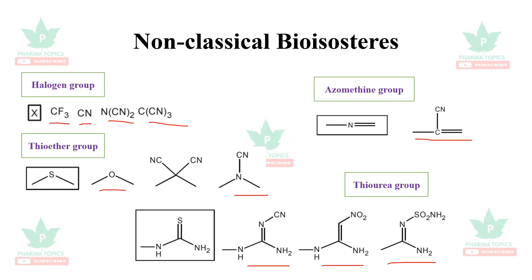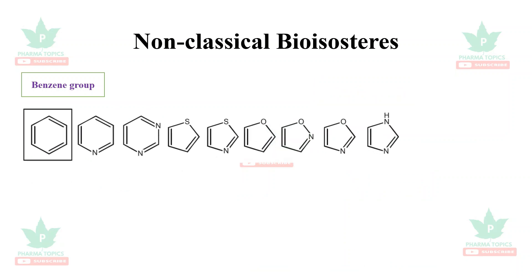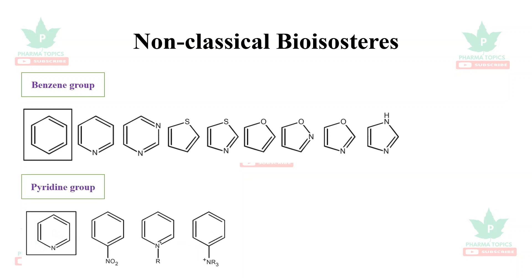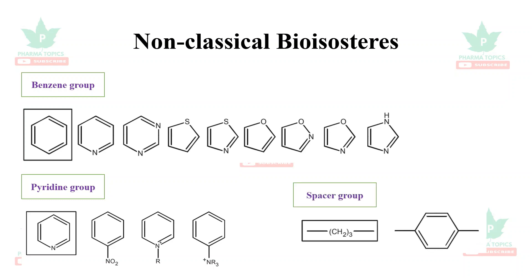The azomethine group (C=N) can be replaced with pyridine, thiazole, furan, or azofuran rings. Benzene can be substituted with various heterocyclic rings. The pyridine group can be replaced with anisole or benzene with an –NR₃ substituent to retain activity. A spacer group can also be modified by increasing chain length using –CH₂– units or using benzene as a spacer.